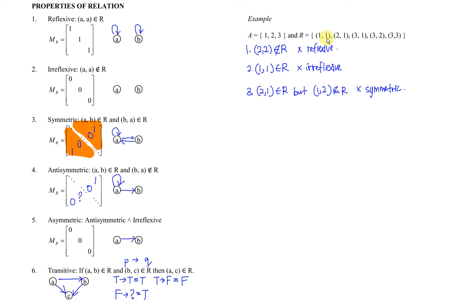Four, anti-symmetric. As we can see, loop is also not important — we just have to make sure it's a one-way relation. So (2,1): is (1,2) here? No. Correct. Then (3,1): is (1,3) here? No. Correct. (3,2): is (2,3) here? No. Correct. We don't have to check for looping because looping is not important under anti-symmetric. So this is anti-symmetric because all relations are one-way.